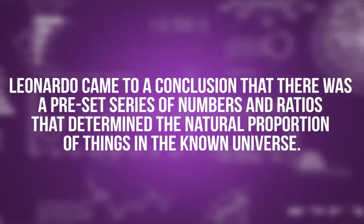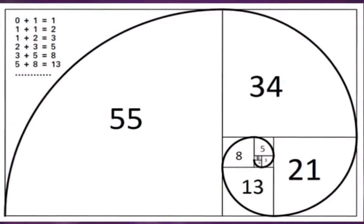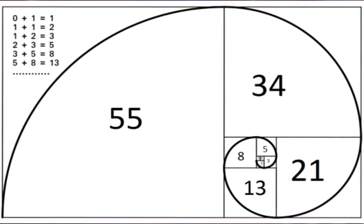Leonardo came to a conclusion that there was a preset series of numbers and ratios that determined the natural proportion of things in the known universe. In a Fibonacci sequence, every number is the sum of the previous two numbers. Let me illustrate the sequence. 0, 1, 1, 2, 3, 5, 8, 13, 21, 34, 55, 89, and so on.